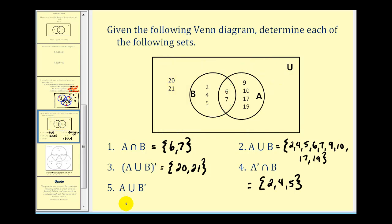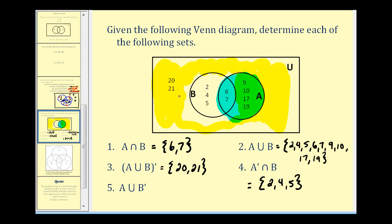Finally, A union the complement of B. Here's set A, and we shade the complement of B — all elements not in set B. The complement of B is the yellow region and A is the blue region; we want the union of those two. The only elements not shaded are two, four, and five, so the union includes six, seven, nine, ten, seventeen, nineteen, twenty, and twenty-one.